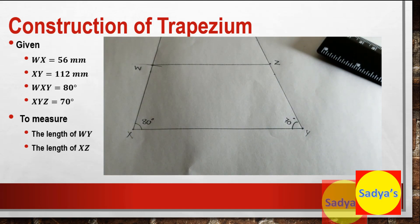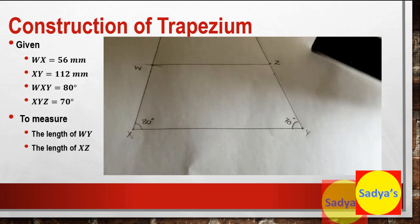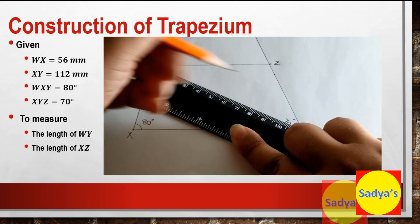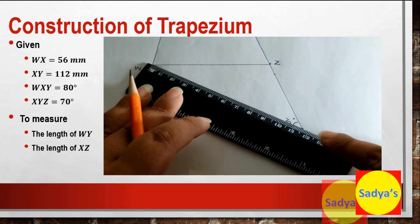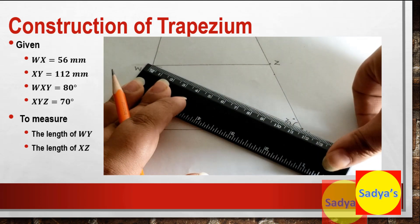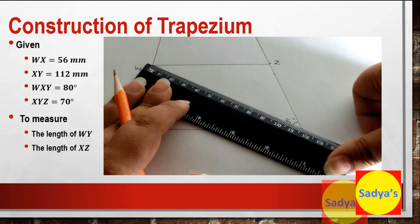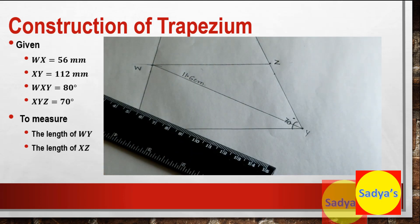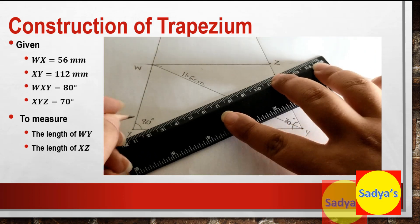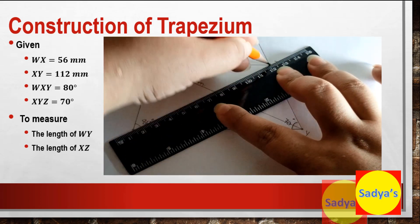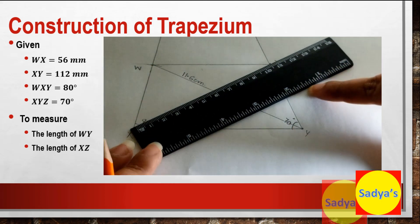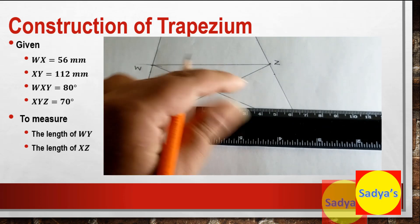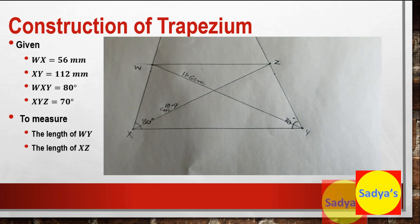Now, in the question they have asked us to measure WY, so let's draw a line from W to Y and measure it — this is 11.6 centimeters. Next, we have to measure the line from X to Z, draw a line and measure it — this is 10.9 centimeters. So we have constructed the trapezium and measured the unknown lengths as well.